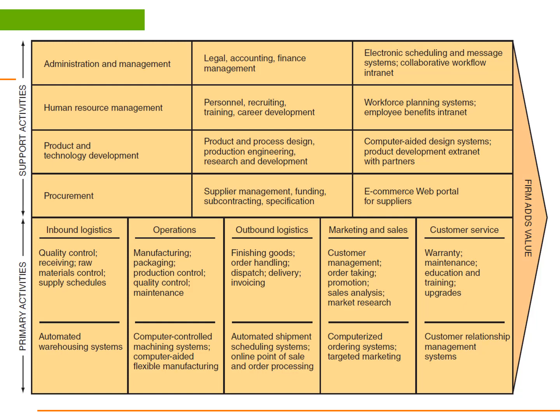Your book defines a value chain as a sequence of activities through which the organization's inputs are transformed into more valuable outputs. A value system includes the suppliers that provide inputs necessary to the firm along with their value chains. After the firm creates products, these products pass through the value chains of distributors all the way to the customers. All parts of these chains are included in the value system.